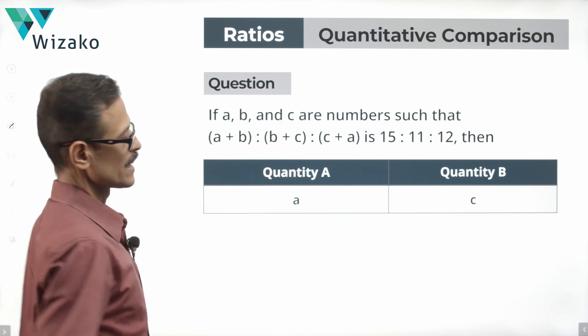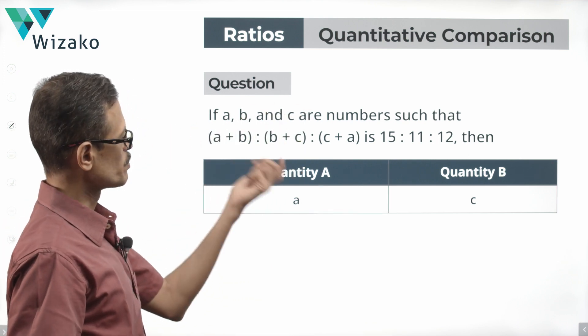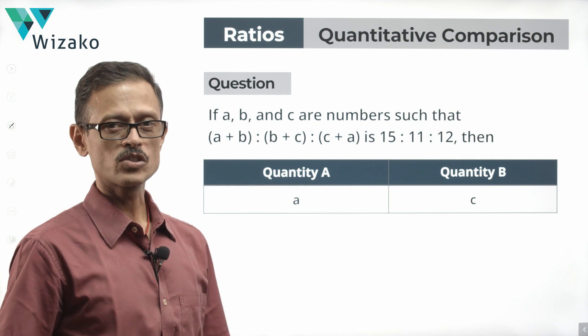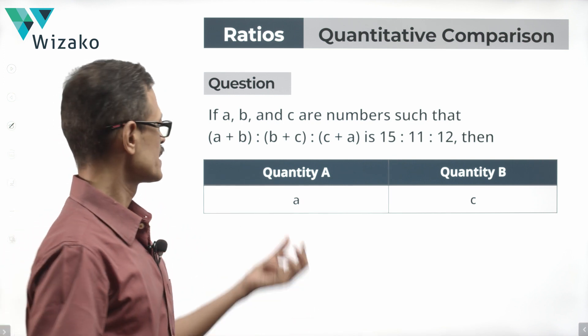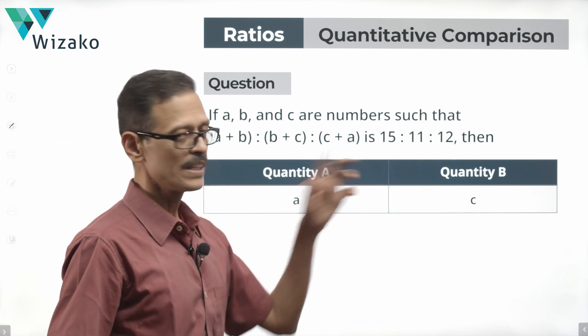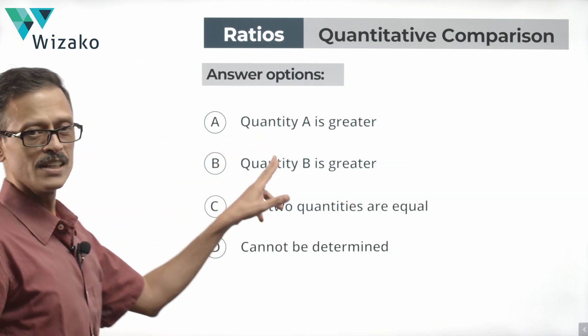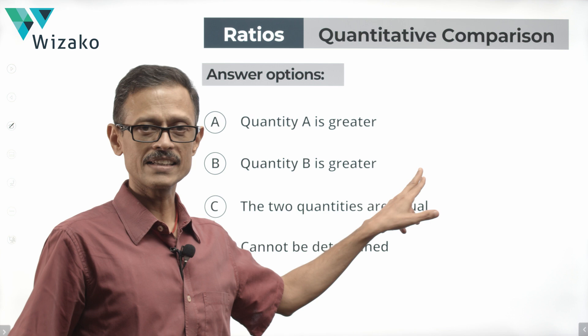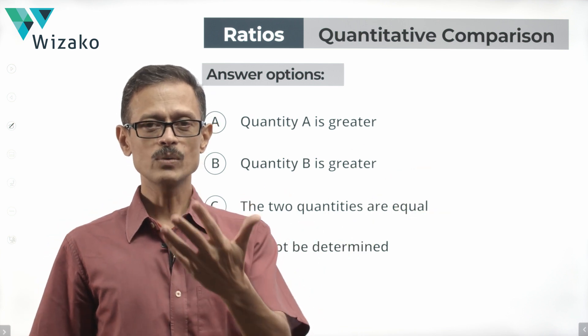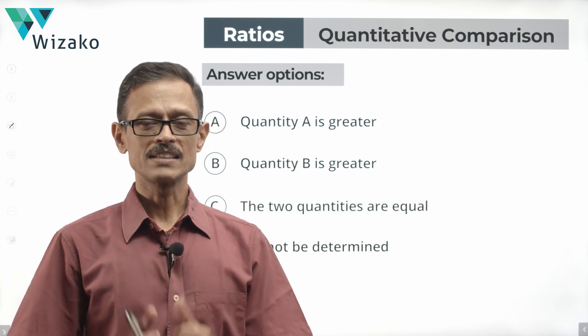If a, b and c are numbers such that (a+b):(b+c):(c+a) is 15:11:12. What we need to compare? Quantity A is a, quantity B is c. Is a greater than c? In that case, the answer will be A. If c is greater than a, the answer is B. They're equal, it is C. If you can't determine, then the answer is D.